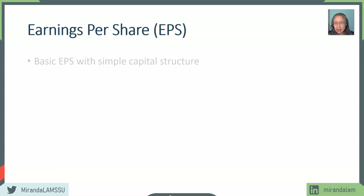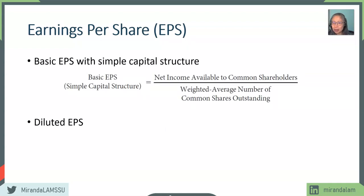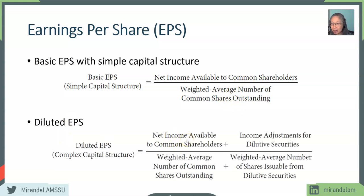To state this in formula form: basic earnings per share is net income available to common stockholders divided by the number of shares outstanding. For diluted EPS, the numerator is net income available to common stockholders plus any adjustments — such as interest adjustments and preferred dividend adjustments — and the denominator is the number of shares outstanding plus the shares that would be issued if those securities were converted. Let's take a look at an example to see how this works.